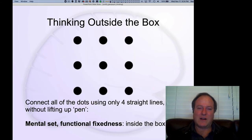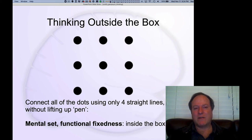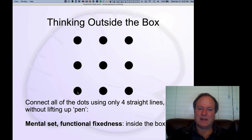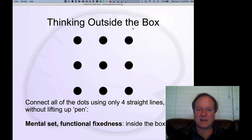This other classic problem-solving task gave rise to the well-known concept of thinking outside of the box. Here, you're supposed to connect all of the dots using only four straight lines without lifting your pen, if you do this on a piece of paper. If you try to do that while staying within the box, you just can't do it — it doesn't work, you can't connect all the dots. It's only when you realize that you can extend your line outside of the box in multiple ways that you can solve the problem.